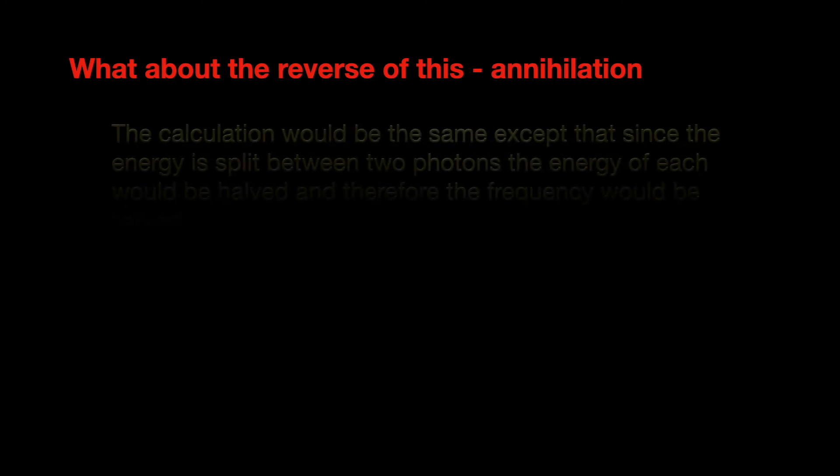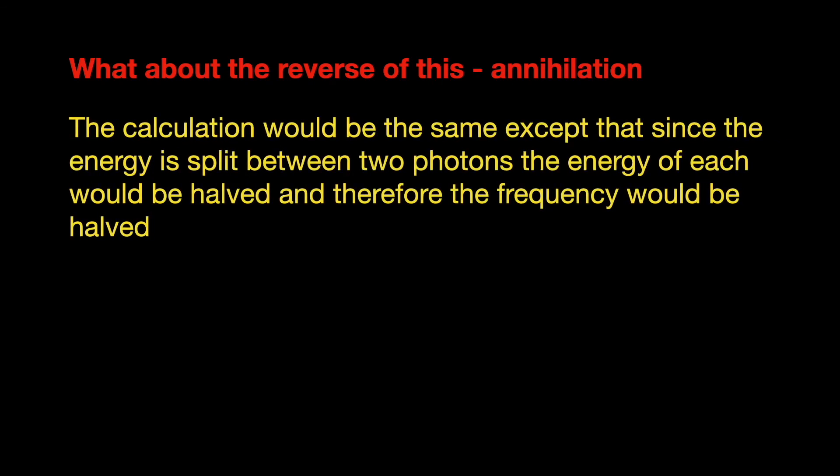The calculation on annihilation is very similar, but in reverse. The mass of the electron and positron disappear, producing two photons. Because the energy is divided between two photons, the frequency would be halved, but the photons still have a frequency well within the gamma band of radiation.